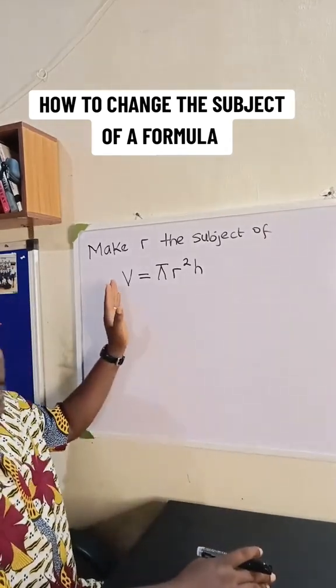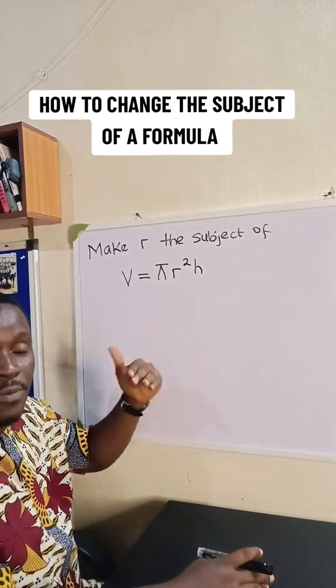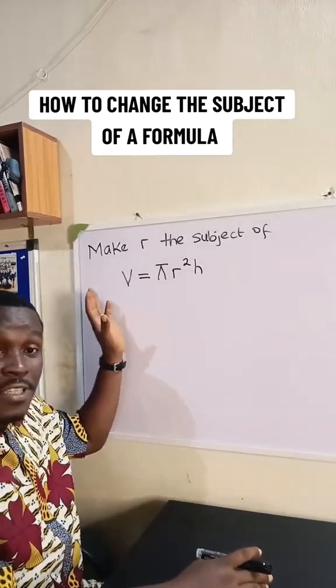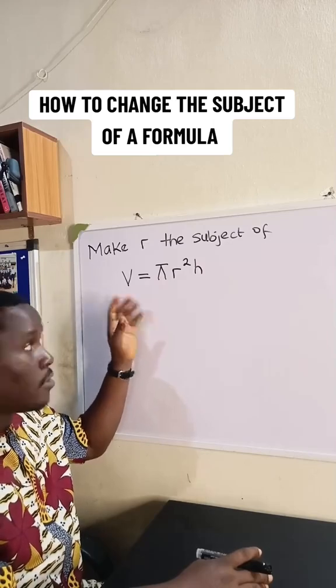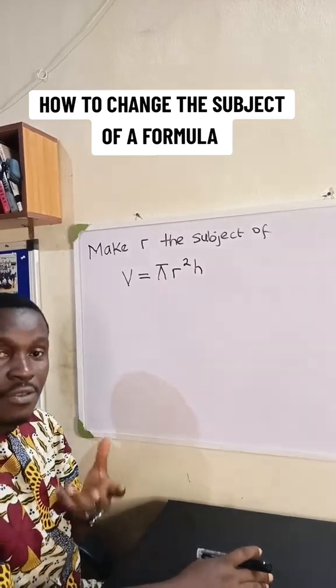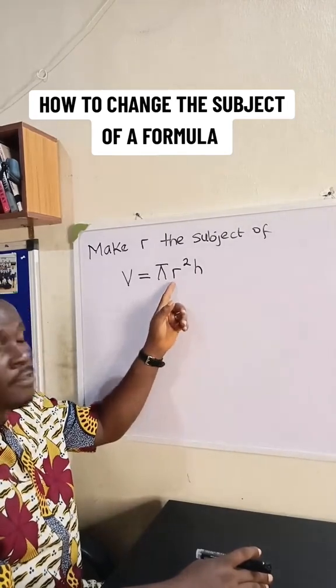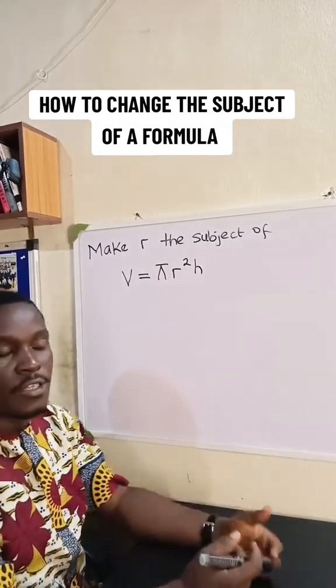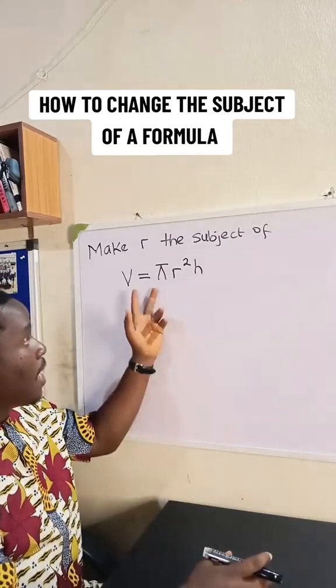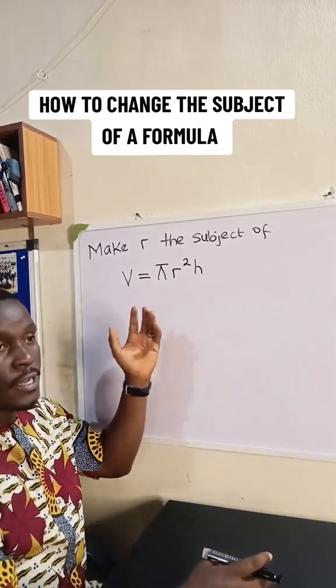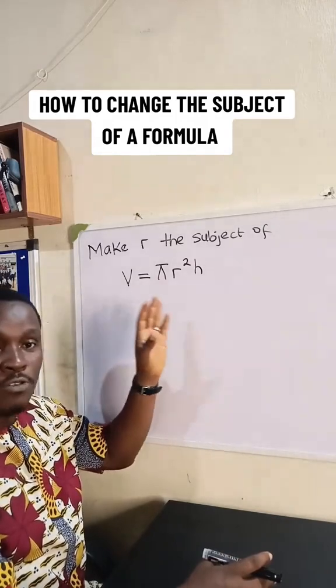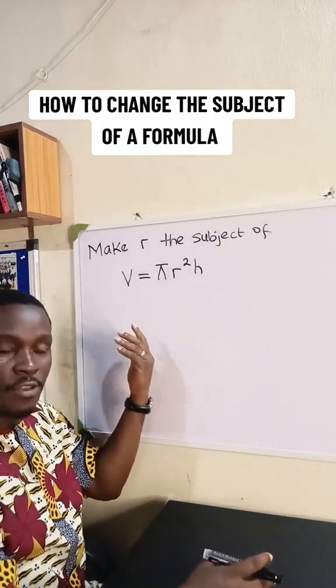So in this formula, the initial subject of this formula is V. I see that V is alone on the left side of the formula. So if you want to make r the subject of the formula, this means r needs to be alone on one side of the formula. So the way I do it is I flip the formula so that the value I want to make the subject is found on the left automatically.